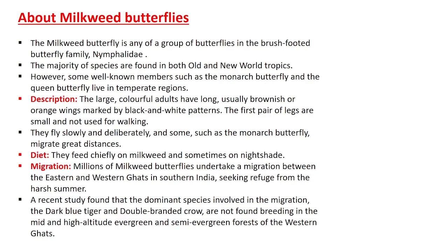Millions of milkweed butterflies undertake a migration between the Eastern and Western Ghats in southern India, seeking refuge from the harsh summer. A recent study has found that the dominant species involved in this migration — the Dark Blue Tiger and the Double Branded Crow — are found breeding in the mid and high altitude evergreen and semi-evergreen forests of the Western Ghats.